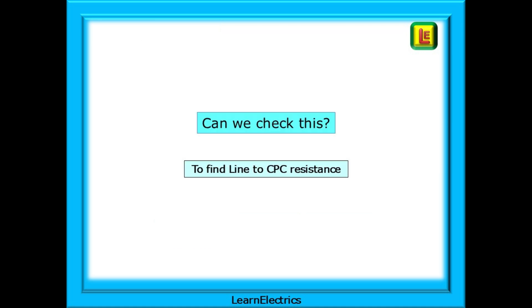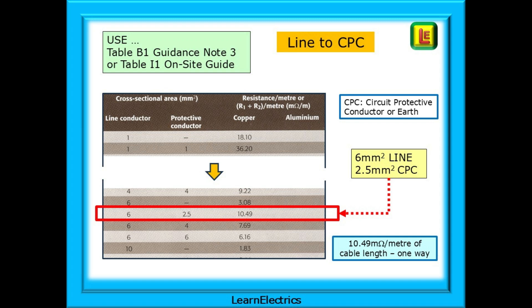But can we check this? How do we know that these numbers are correct? We can begin with checking the line to CPC resistance in the tables. These tables are very easy to use and I do recommend that you practice using them — they will prove so useful in your career. We can use either table B1 in Guidance Note 3 or table I1 in the On-Site Guide; it's the same table, the same data. We are using 6x2.5 twin and earth, so begin by looking down the line conductor column — the leftmost column — and find the block for 6mm conductors. Now find the protective conductor or CPC size in the second column, which is 2.5 square millimetres. The third column will give you the combined resistance of 6x2.5 copper cable, and this is 10.49 milliohms per metre length measured just one way.